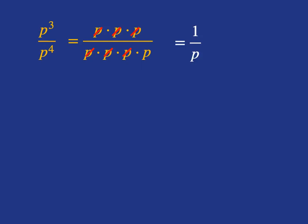But we've also been dealing with that rule for division: when we are dividing, we subtract the exponents. So p³ over p⁴, using that rule, should be p to the 3 subtract 4, and that is p to the minus 1.